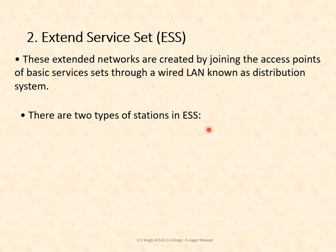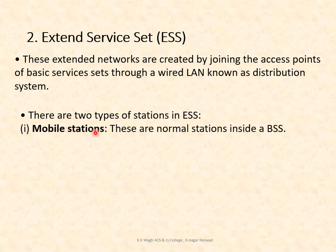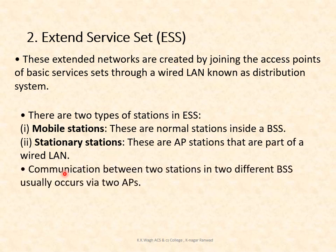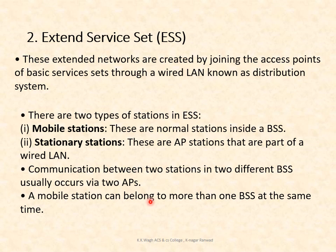There are two types of stations in an ESS. First are mobile stations — normal stations inside the BSS. Second are stationary stations — access point stations that are part of the wired LAN. Communication between two stations in different BSSs usually occurs via two access points. One station can belong to one or more BSSs at the same time.